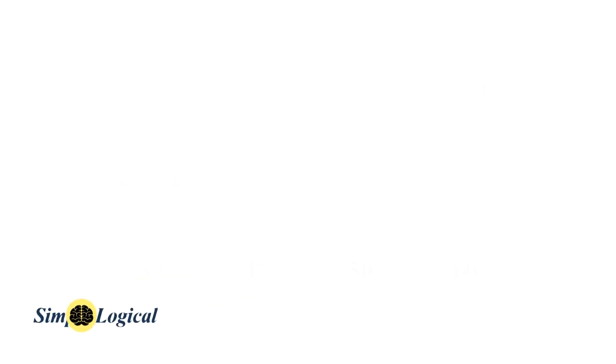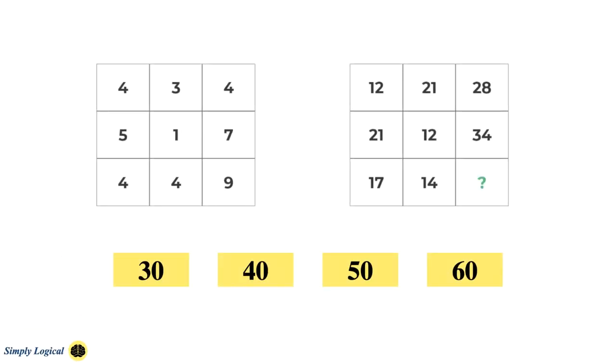Let's check the problem now. Given is a set of 9 numbers that relate to each other in a certain way. Determine the missing number in the second set. Assume the second set also works in the same way as the first set.